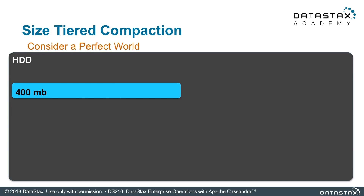A perfect world meaning none of this data overlapped, there was no data to delete, and every bit of that data was 100% valid. So now you get a 400 meg file out of four 100 meg files. Pretty easy.